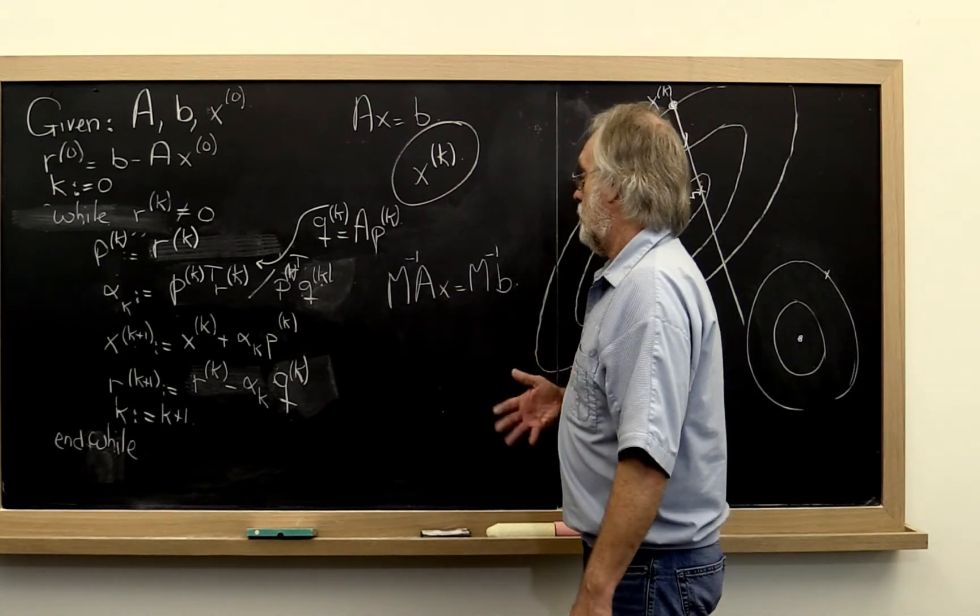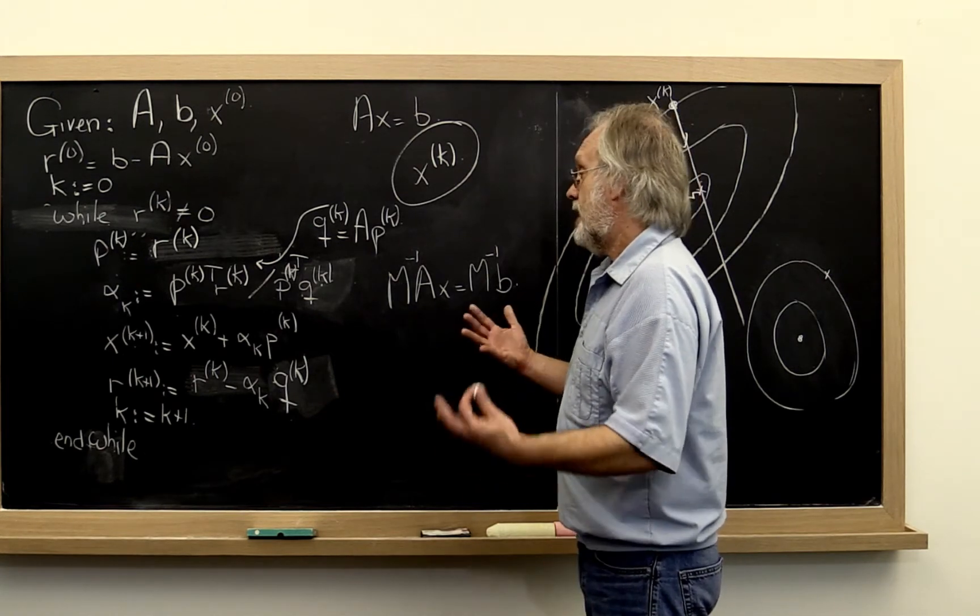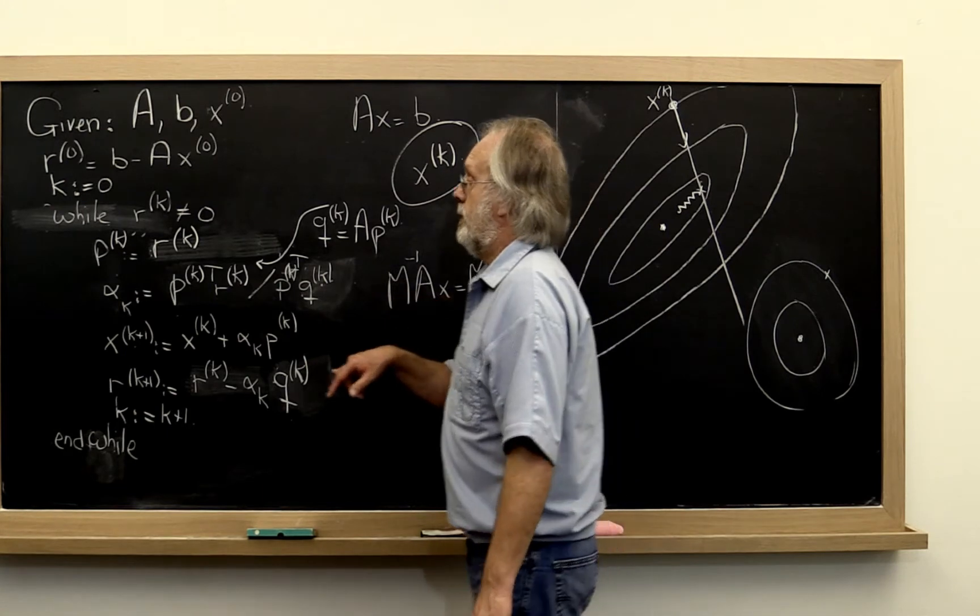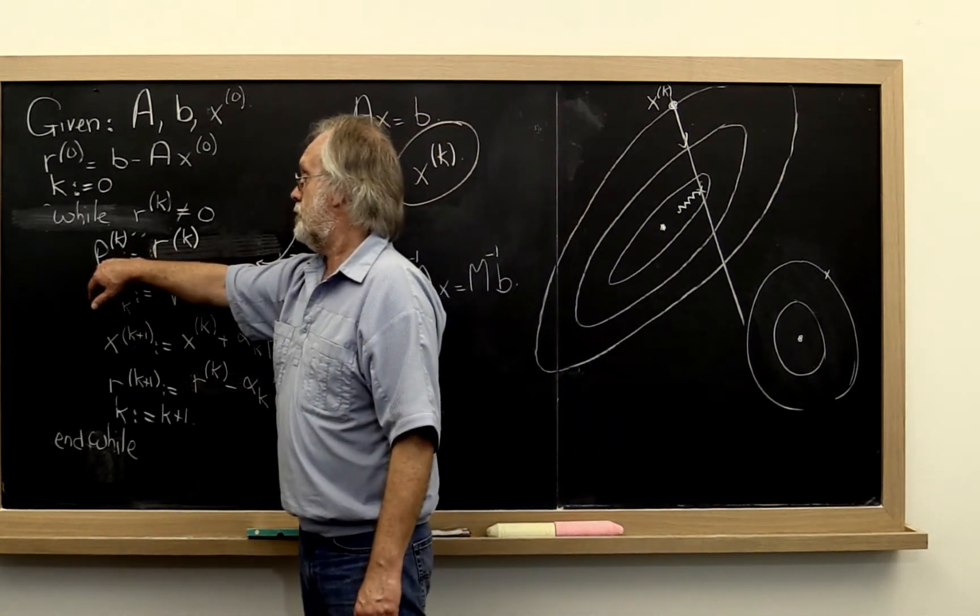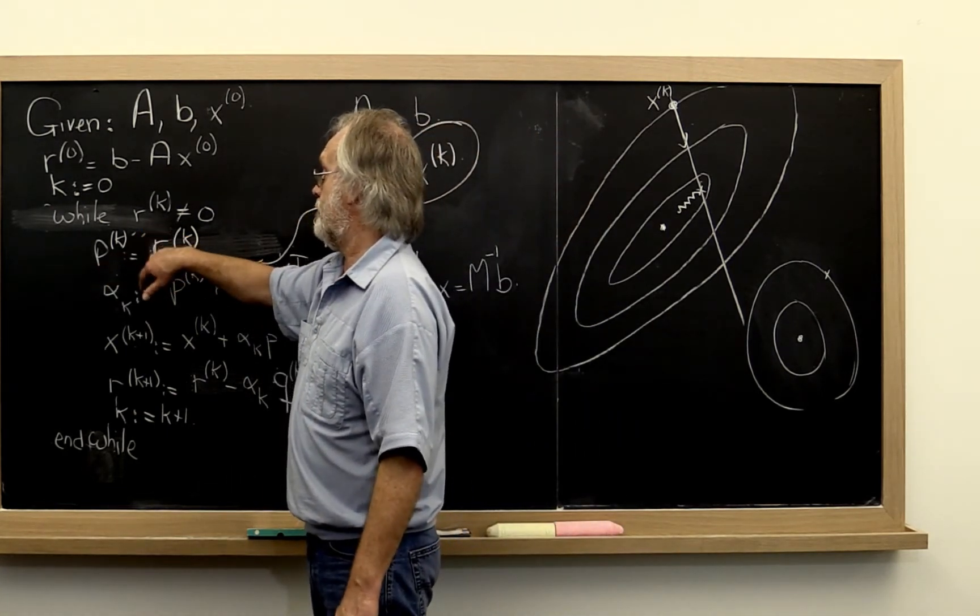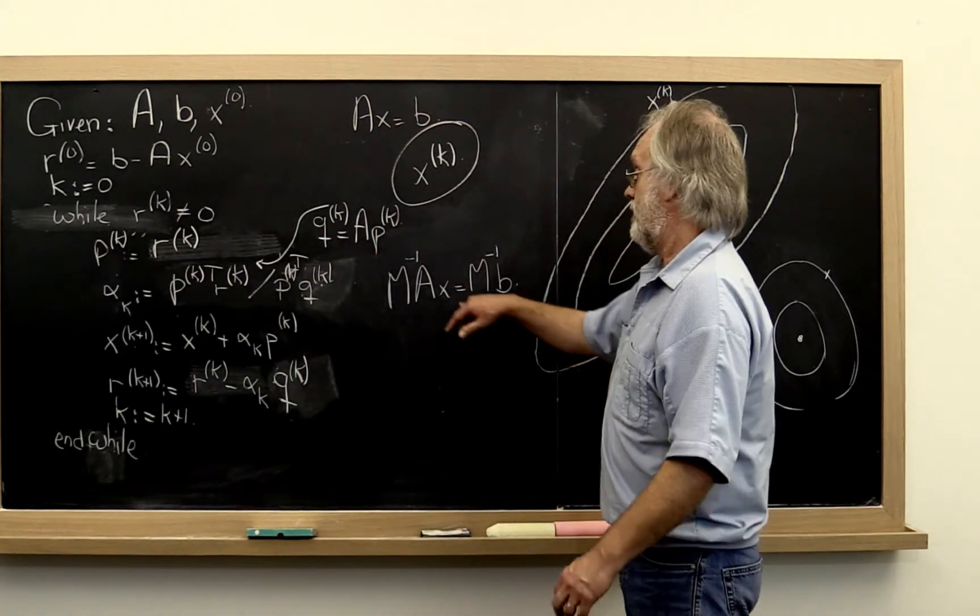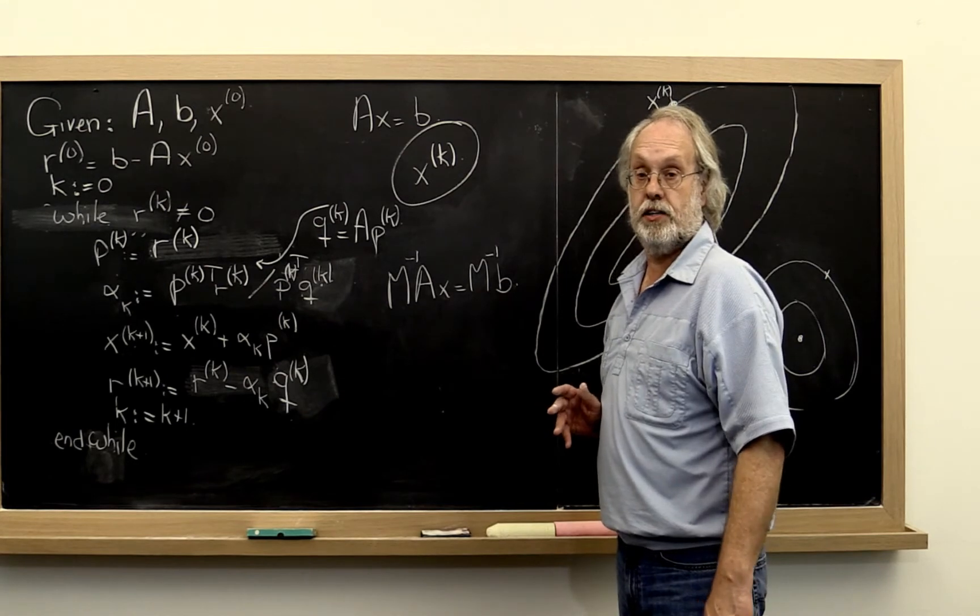All right. Well, there turn out to be elegant ways of doing this. As a matter of fact, it's a matter of replacing your search direction by M inverse times the residual and you have the same net effect where in the end you end up with the vector x that you want.